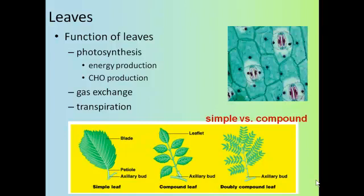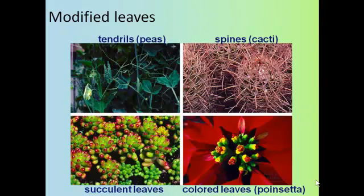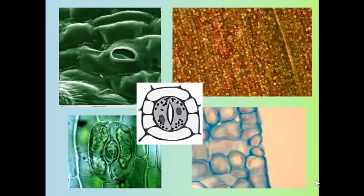There are a number of modified leaves as well. You see tendrils in pea plants and blackberry vines, and spines in plants such as cacti. This next slide shows some interesting close-up pictures of different leaves, where you can see the guard cells and the stomata in between the two guard cells.